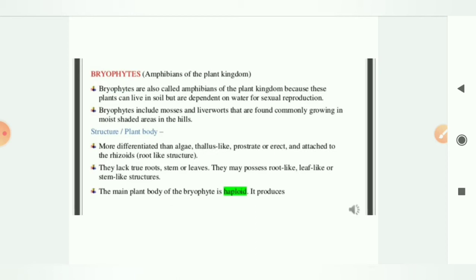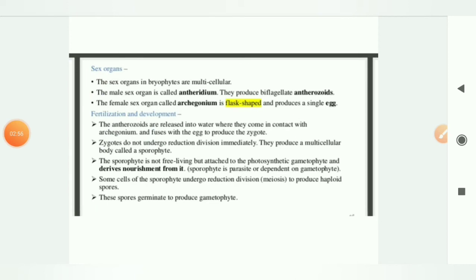If I talk about their sex organ, sex organs in bryophytes are multicellular. They are antheridium in case of male and archegonium in case of female. Antheridium produces antherozooids which are biflagellated and thus they move, and archegonium produces single egg.